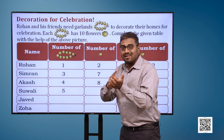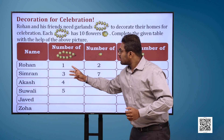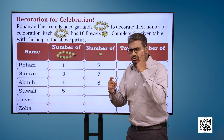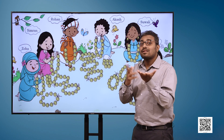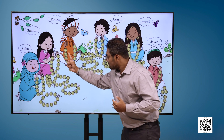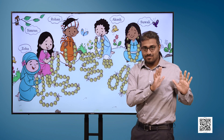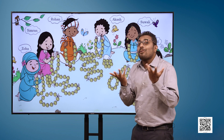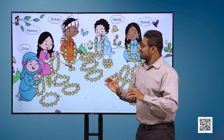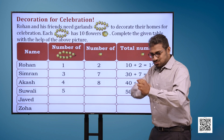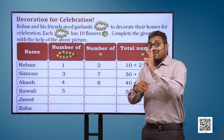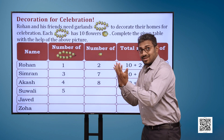Name: Simran. Number of garlands: 3, number of flowers: 7. Total number of flowers: 30 plus 7, which is equal to 37.